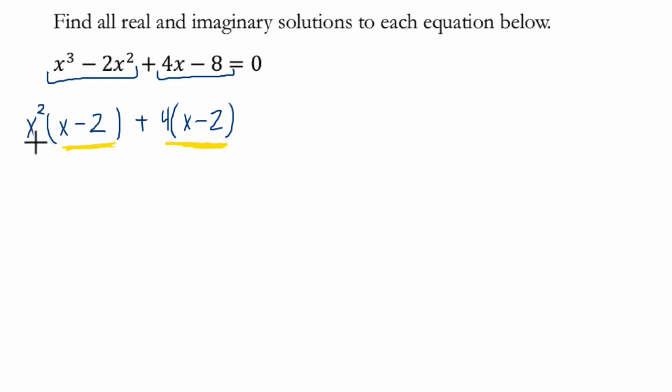So now I say, okay, well, if I take x minus 2, and I multiply it by x squared and 4, right, I would have this in factored form. So now, I've got this, I've factored it out: (x - 2)(x² + 4) = 0.